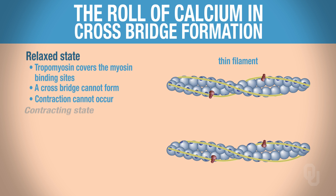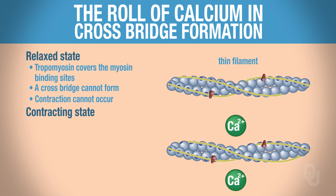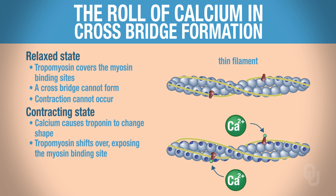In order for the muscle to contract, calcium has to bind to troponin. When calcium binds to troponin, that causes troponin to change shape. When troponin changes shape, that causes tropomyosin to shift over, and when tropomyosin shifts over, that exposes the myosin binding sites. Now that the myosin binding site is exposed, a crossbridge can form, and because a crossbridge can form, the muscle can contract. That's the role of calcium in forming a crossbridge.